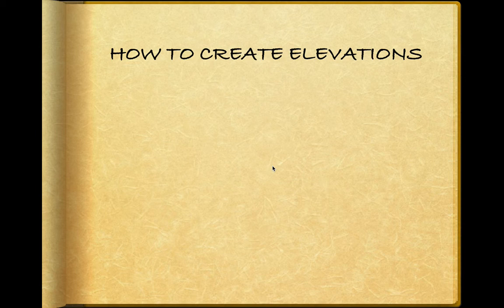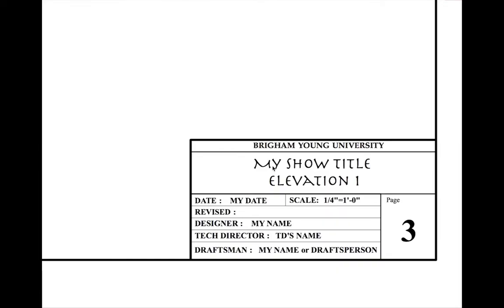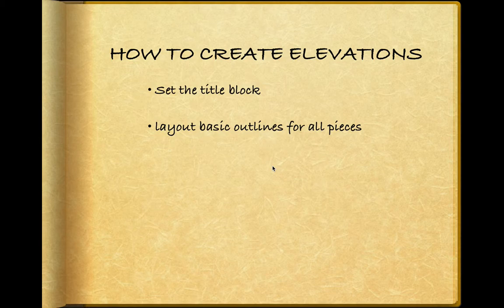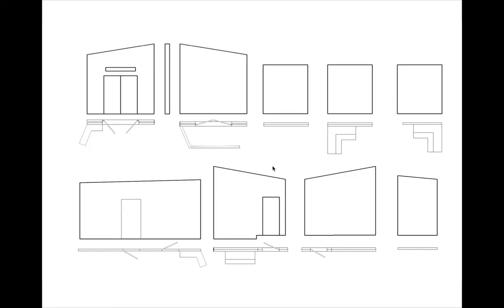Notice how we can create elevations. First, we'll set the title block just like we did in the ground plan. We'll add another sheet, add a number to the drawings we've already created, and call it the elevation for our production. We might have multiple elevations depending on how much room it's going to take to draw them. Then we're going to lay out the basic outlines for each of the scenic pieces — the basic shapes of all the wall units. We see front views, side views, and top views.